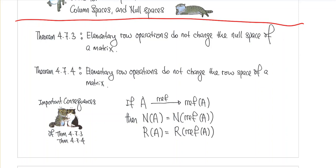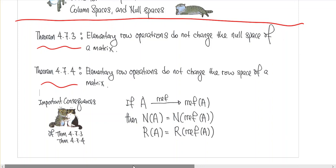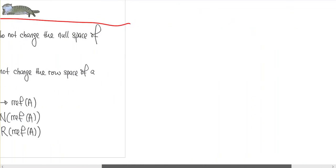These are theorems 4.7.3 and 4.7.4. Basically they tell us that elementary row operations do not change the null space of a matrix and do not change the row space of a matrix. So what it says is that if you have a matrix A and you do a row operation to get to a matrix B...